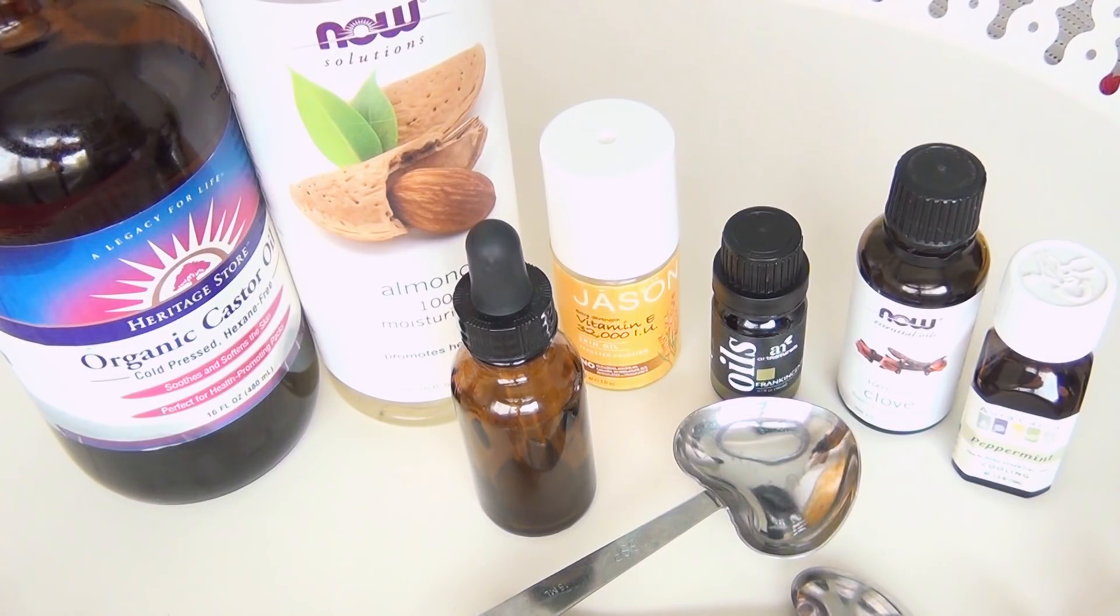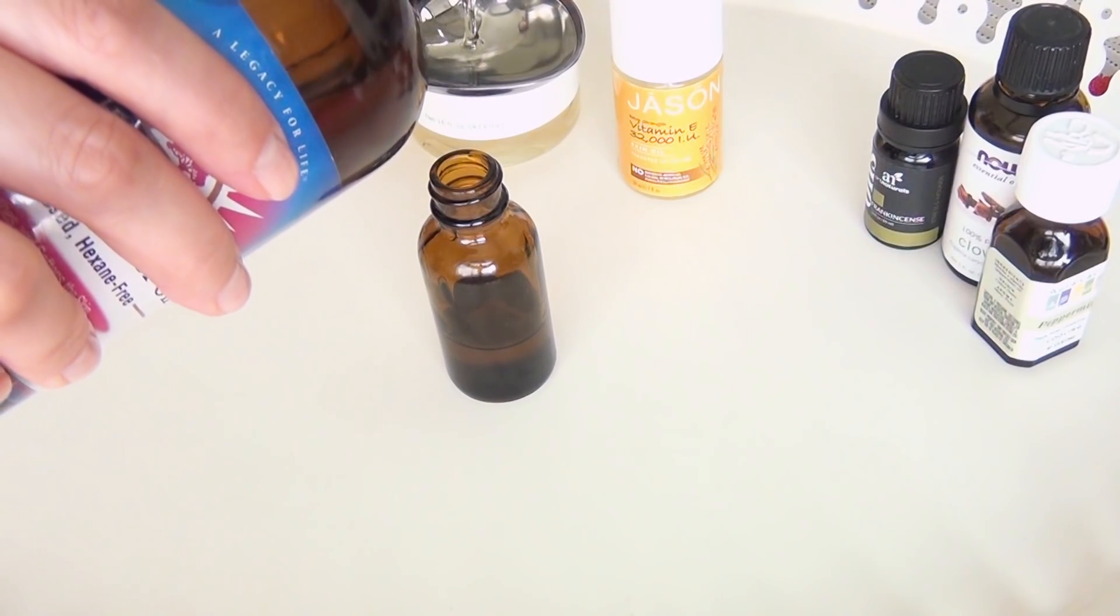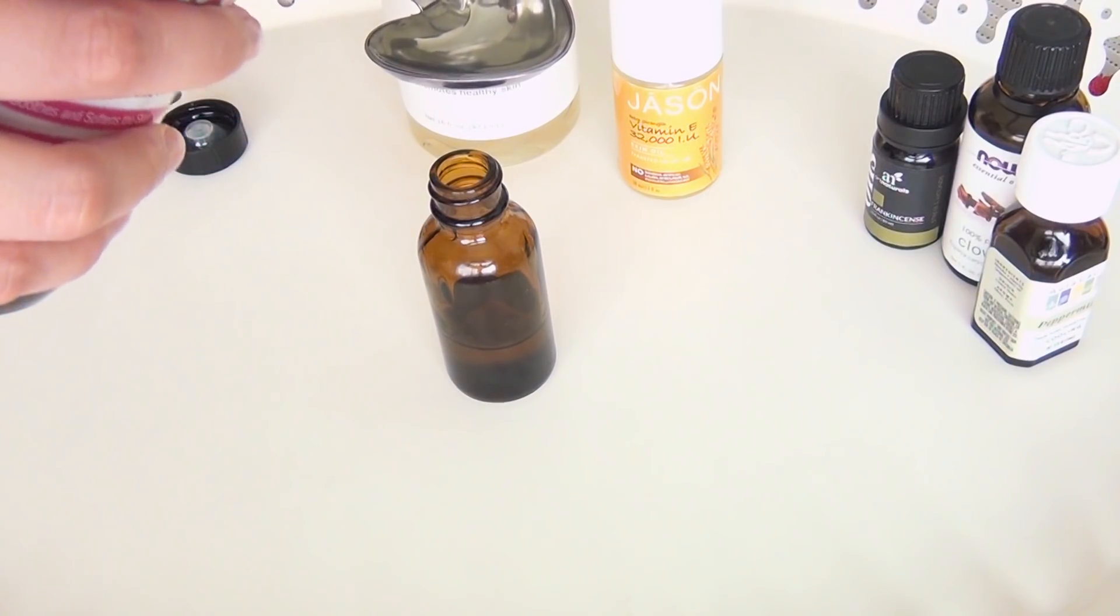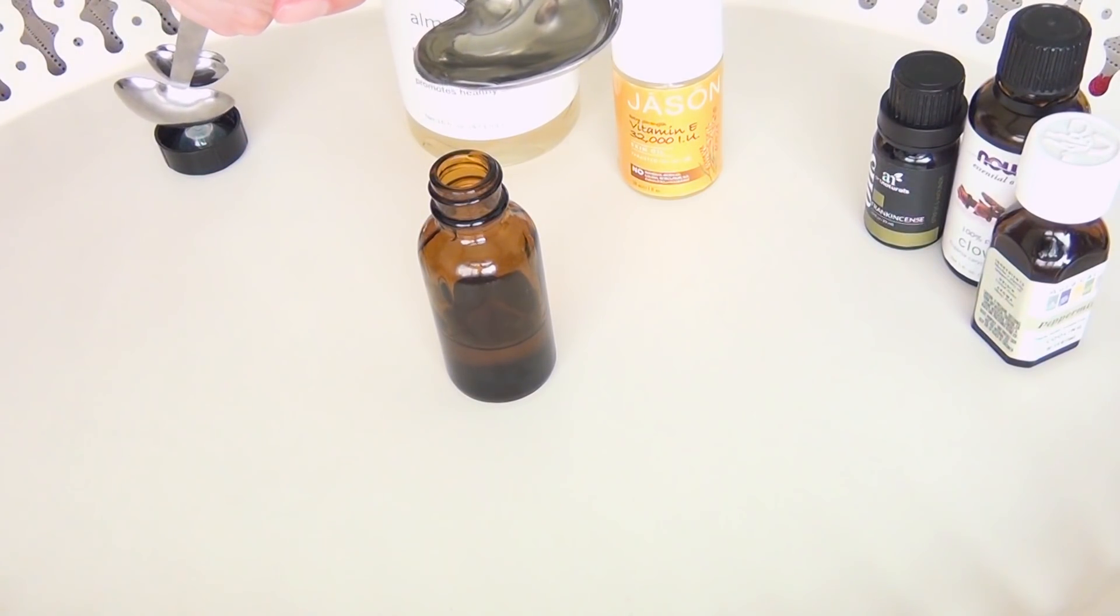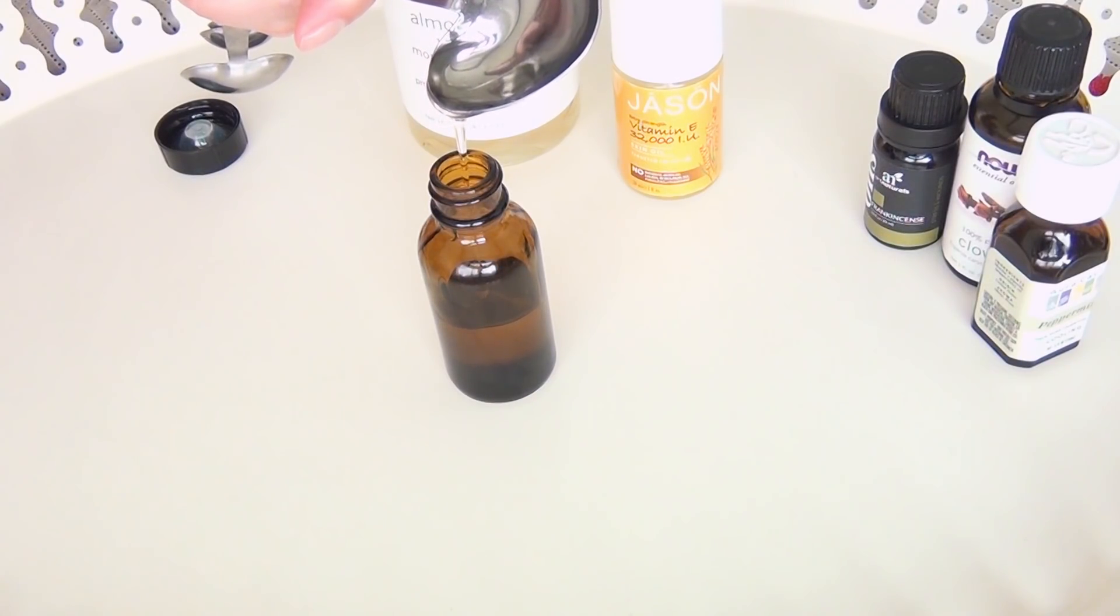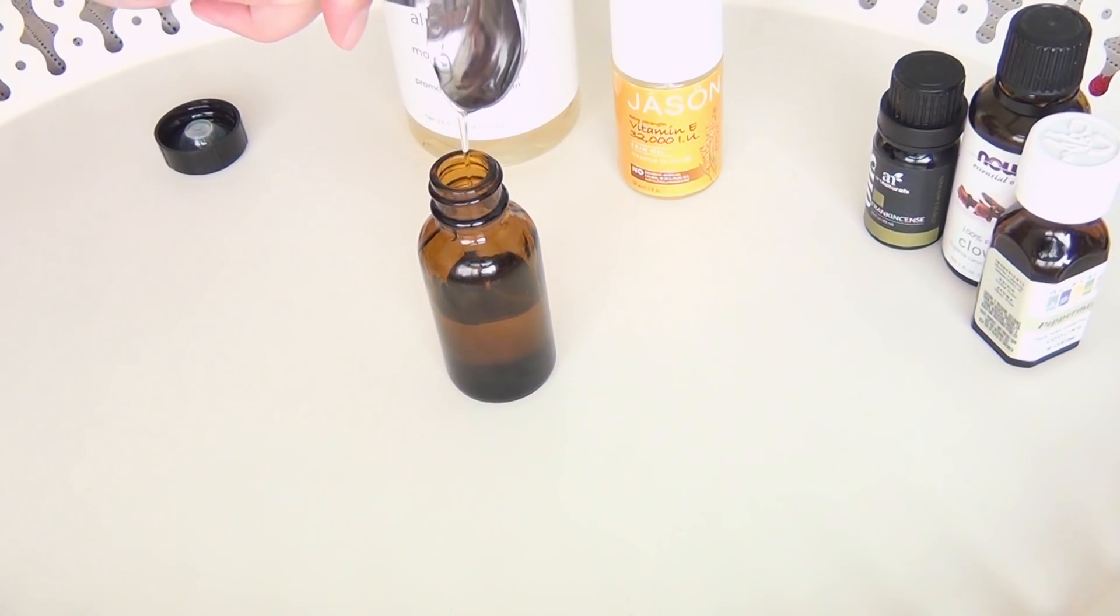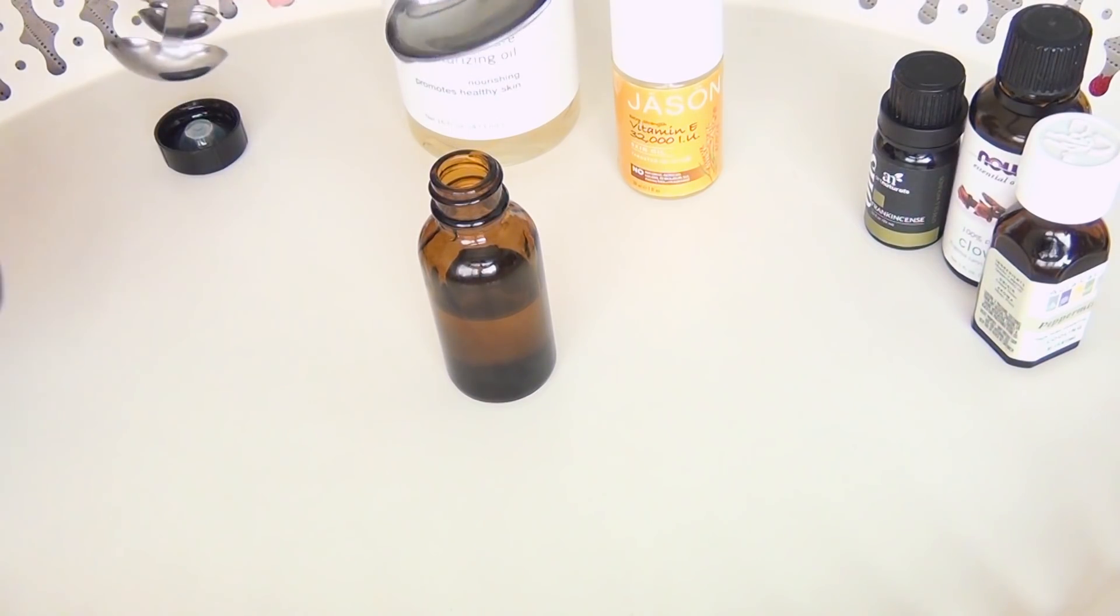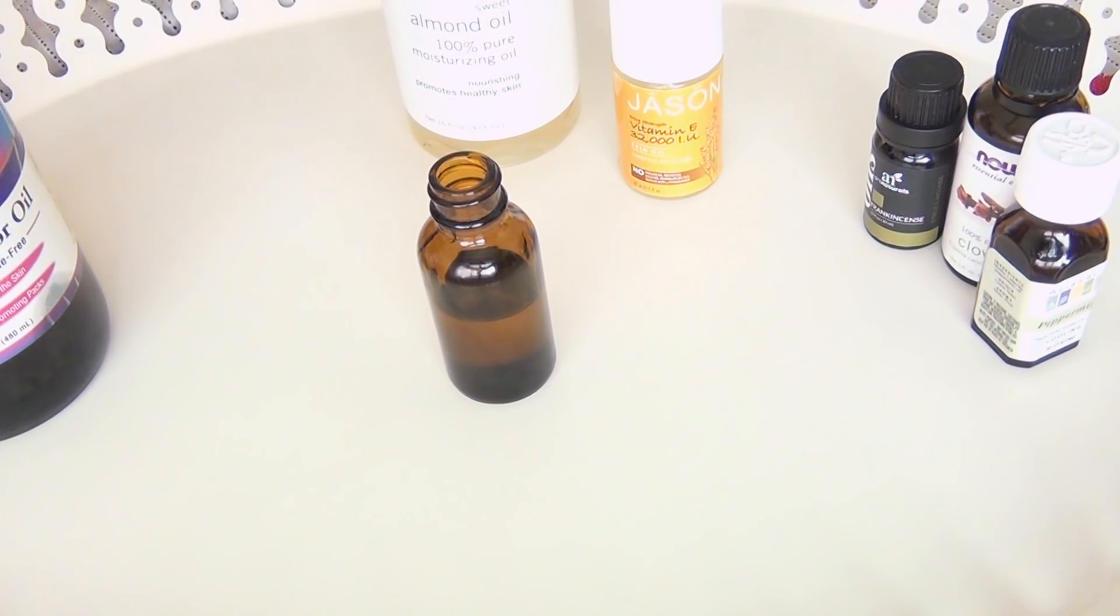Begin by adding two parts of your castor oil. I'm using a one ounce container so I'm adding two tablespoons of this castor oil. It's a fantastic anti-inflammatory, antifungal, antibacterial oil. It's great at stimulating hair growth and it's also a really great skin and hair moisturizer.